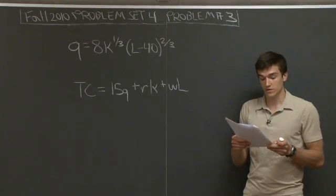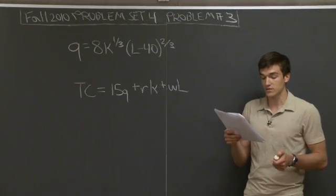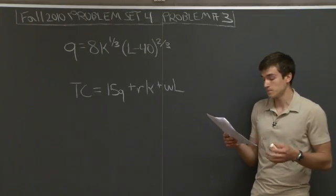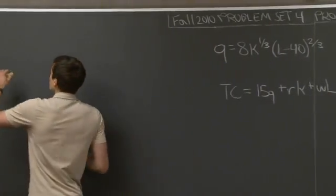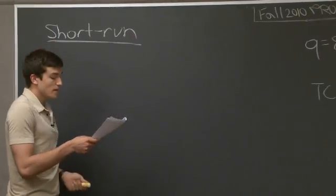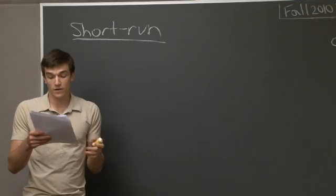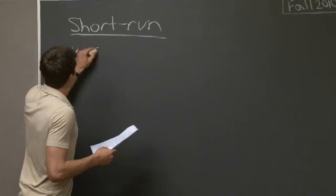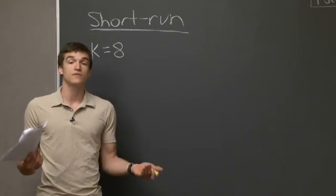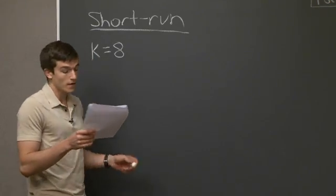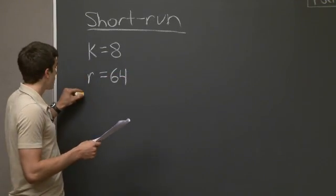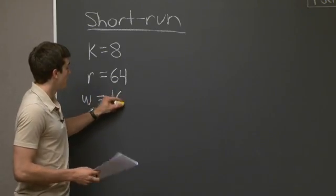Part A says: suppose in the short run, the machine hours rented are fixed at k equals 8, its rental rate equals 64, and the wage rate equals 16. Derive the short run total costs and the average costs as a function of output level q. The key difference between the short run and long run in economics is that in the short run, the amount of capital a firm can use is fixed. Because machines are a fixed cost, you can't change how many machines or how often you use them, so we set k equal to 8.